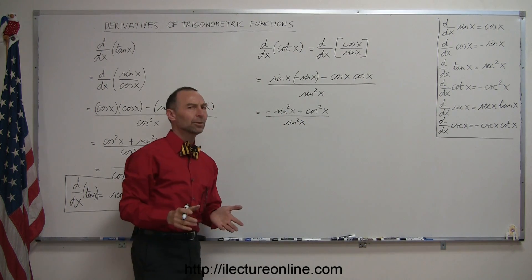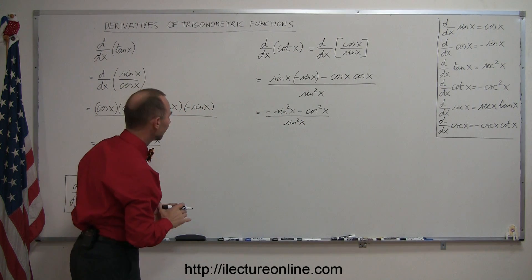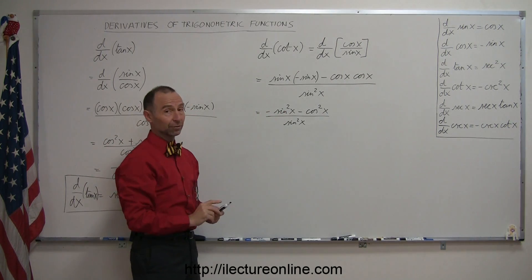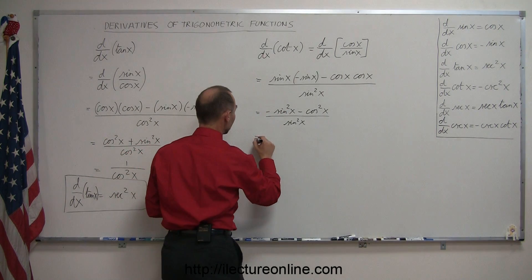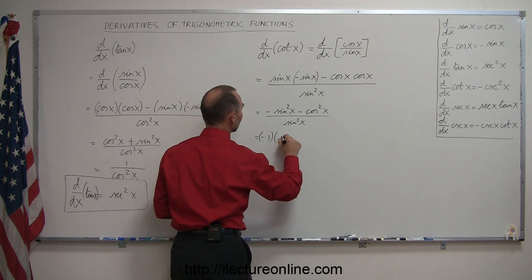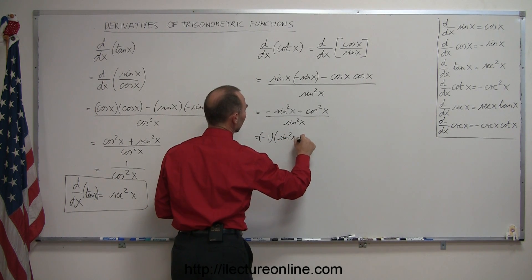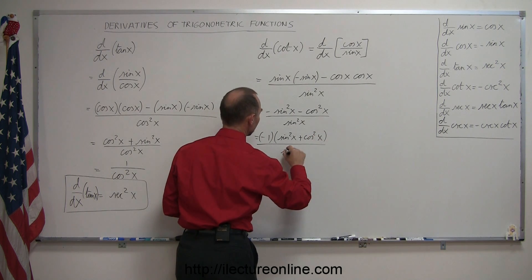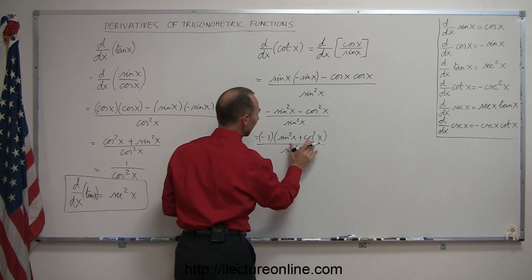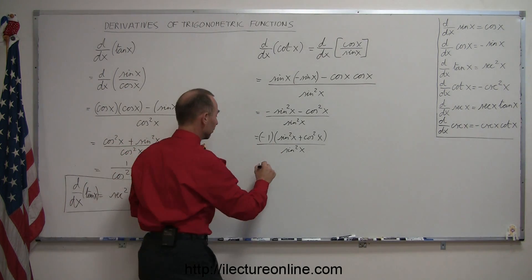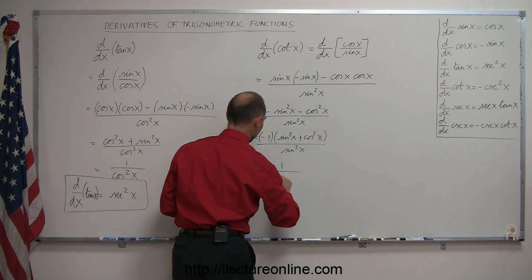Now, I want to factor out negative one from the numerator. So that gives us minus one times sine squared of x plus cosine squared of x, all divided by sine squared of x. Again, sine squared plus cosine squared equals 1, so we can write this as minus one over sine squared of x.